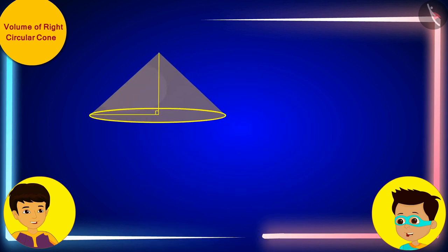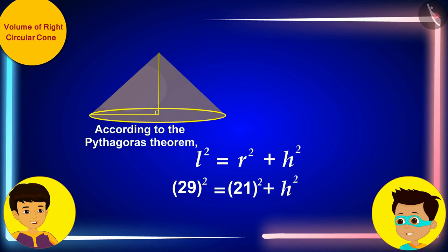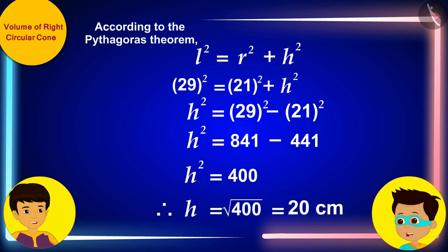Let us now replace l as the slant height and r as the radius respectively. The slant height of the sand pile is 29 centimeters and the radius of its base is 21 centimeters. Look Manas, we should solve it in this way and find the height of the conical sand pile.